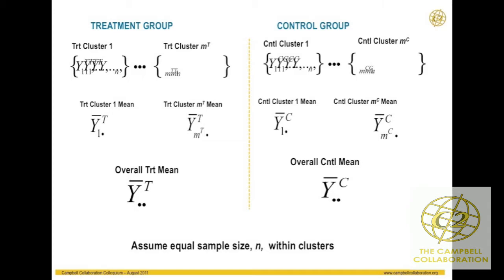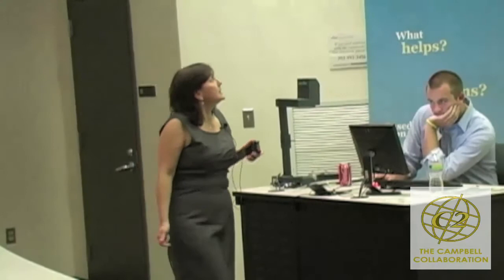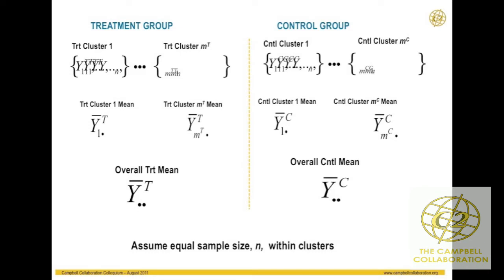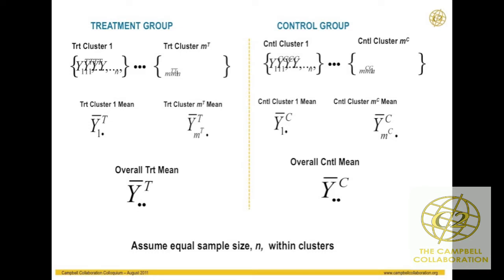In the treatment group, we have a set of observations from different clusters. We have cluster one, and then we might have up to MT clusters. To simplify things, we're going to assume that every cluster has the same sample size — the same number of people within each school or classroom. We have N observations in cluster one in the treatment group, N observations in cluster MT, and the same in the control group with MC clusters. Then each cluster has its own mean — y-bar T one-dot for the mean of the first cluster in the treatment group, and so on through the MT cluster, and similarly for the control groups — plus overall treatment and control means.